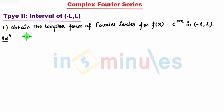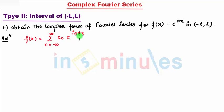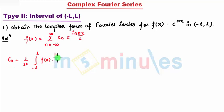So let's start with the solution. I can define f(x) as the summation from n = minus infinity to infinity of c_n times e^(i n π x / L), where c_n is given by 1 divided by 2L times the integral from minus L to L of f(x) times e^(minus i n π x / L) dx.